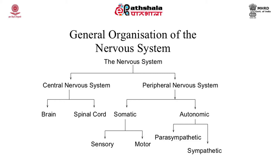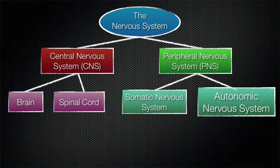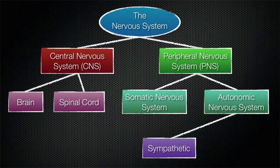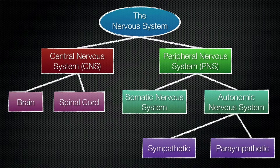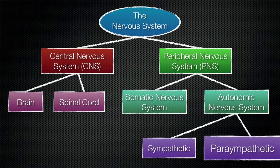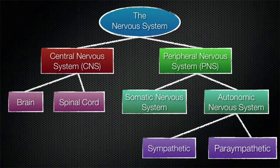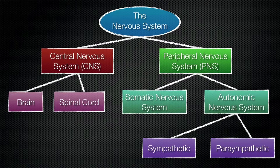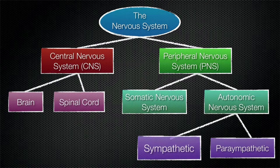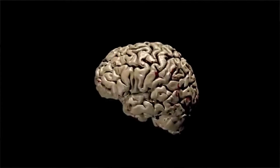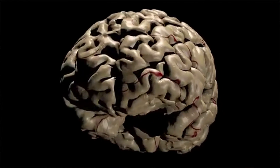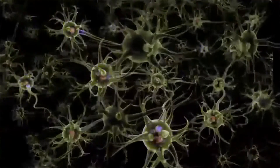The autonomic nervous system, also called the ANS, has two branches: the parasympathetic and the sympathetic. The parasympathetic usually takes care of normal day-to-day functioning, whereas the sympathetic takes part in most emergency situations. That is the broad classification of the organization of the nervous system.